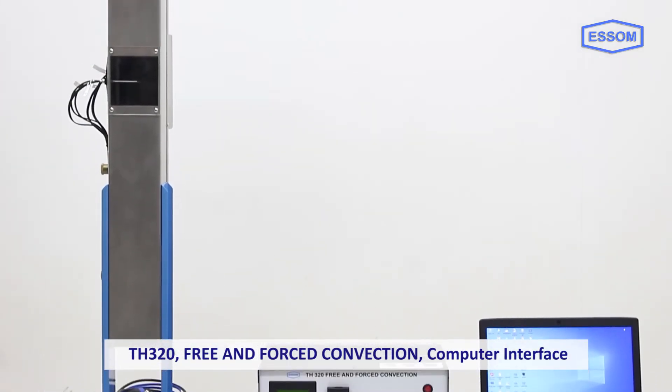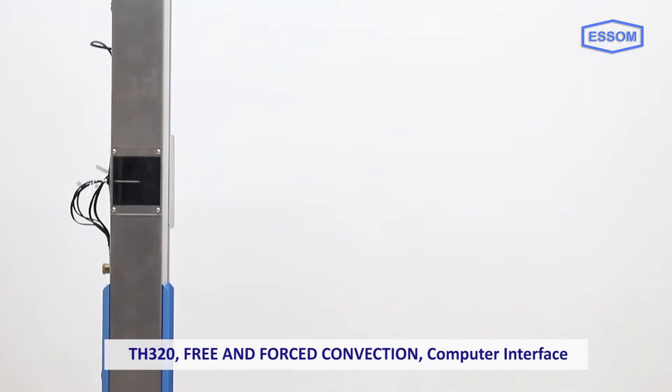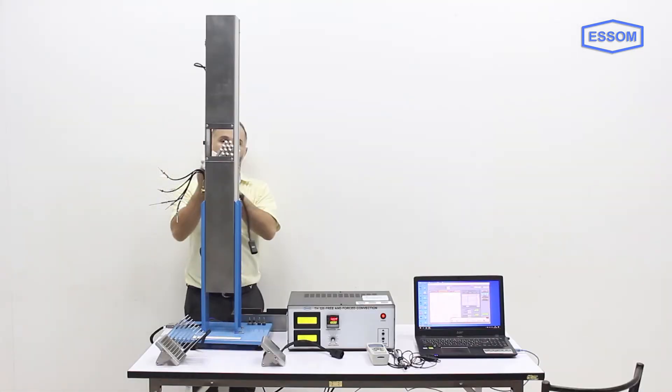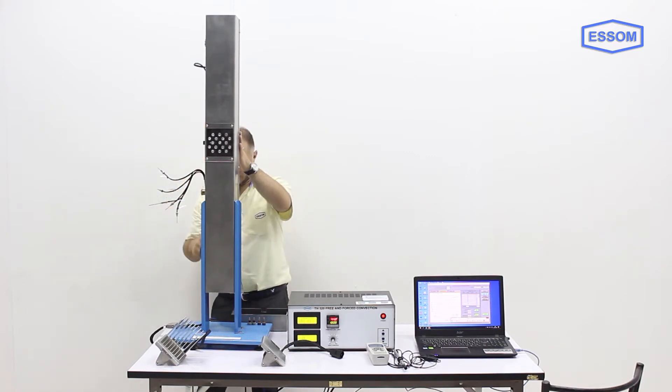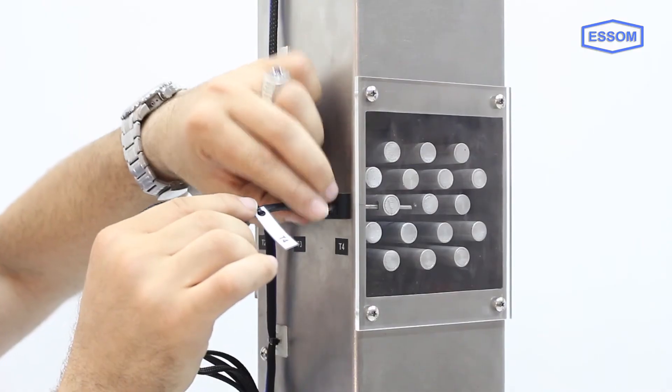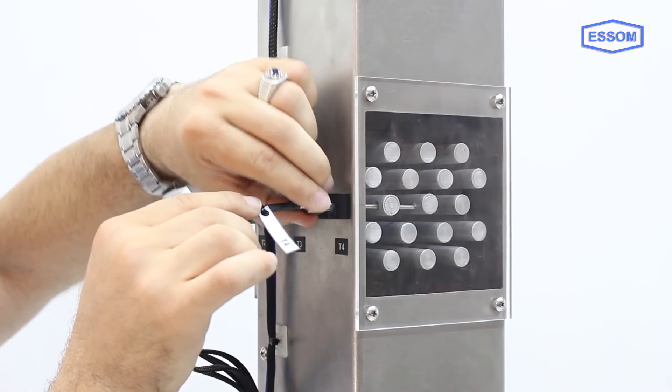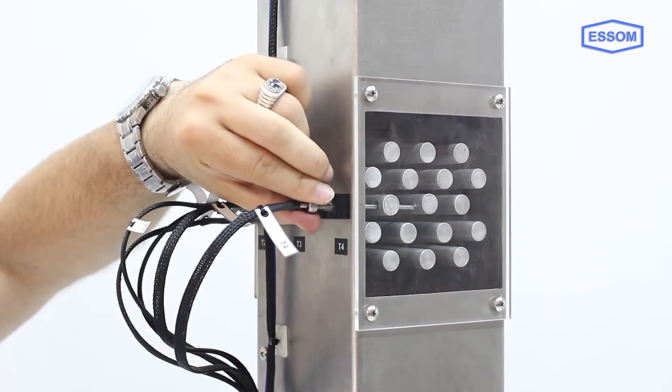SMTH 320 free and forced convection computer interface. The unit is used for studying heat transfer by free and forced convection in a vertical duct. A heating surface is attached to the middle of the duct. Three types of heating surfaces are available: vertical flat plate, plate with cylinders, and finned plate.